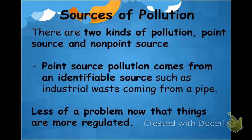If something is point source pollution, I can point to that thing and say that is my source of pollution — it's coming from a single, identifiable source. The main example used for point source pollution is a pipe. If an industry has waste leaking from a pipe into a lake, you can point to that pipe. Similarly, if someone on a boat dumps oil overboard, you can identify that single source of pollution going into the lake.